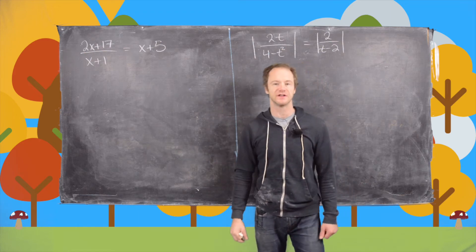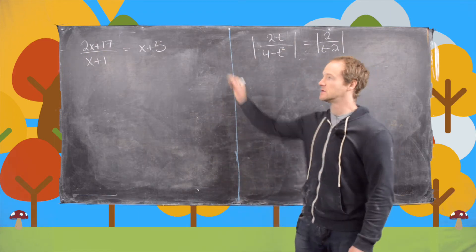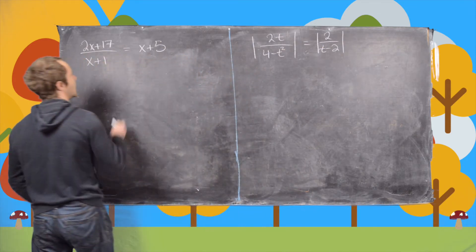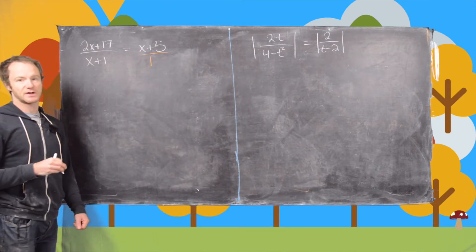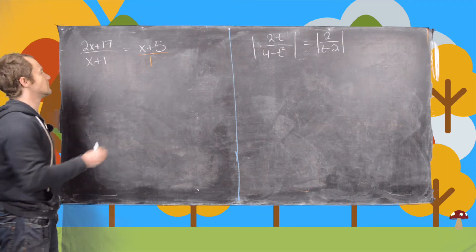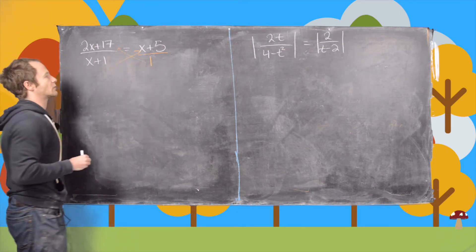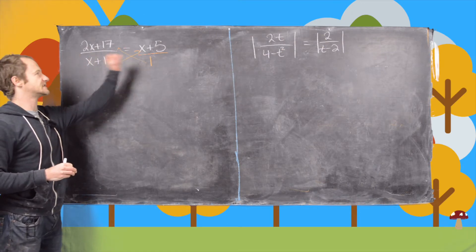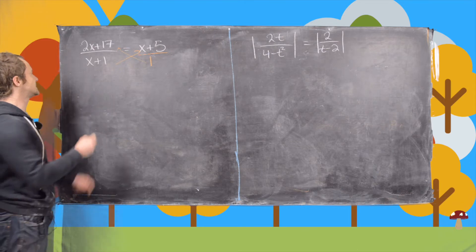In this video we're going to look at the solution to these two rational equations. So let's get into the first one. Notice we can write the right-hand side as (x + 5)/1, which gives us motivation to cross multiply. We're only able to do that because we have a single fraction on the left-hand side and a single fraction on the right-hand side.